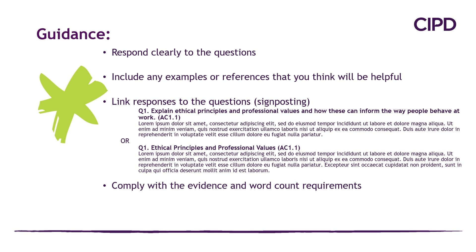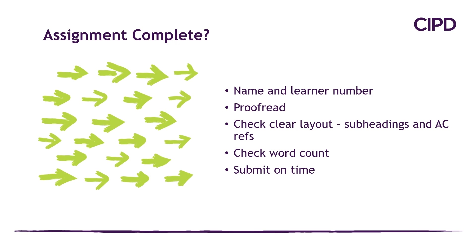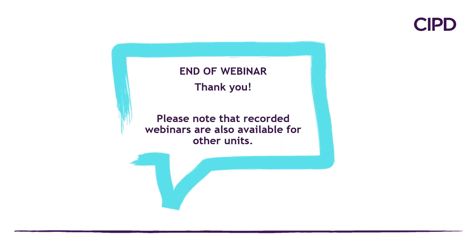Finally, and this is essential: make sure you comply with the evidence requirements and the word count requirements. When you've taken all that on board, your assignment should be complete. Just a few final checks: always make sure your name and student number has been added, that you've proofread your assignment, that you've got a clear layout with subheadings and AC references, and that you've met the word count properly. Above all, submit your assignment on time. Thank you for staying with us, and we hope it has been helpful. Please note there are other recorded webinars available for the other units. Good luck with your assignment.